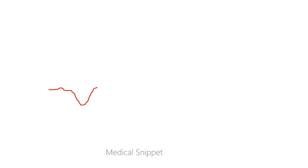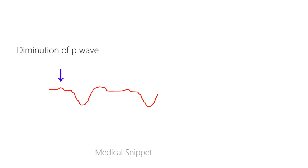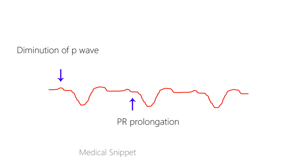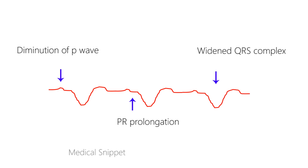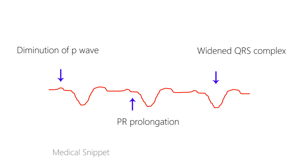As the serum potassium further raises, there is diminution or loss of P-wave, prolongation of PR interval, widening of QRS complex, and any kind of conduction block can occur.